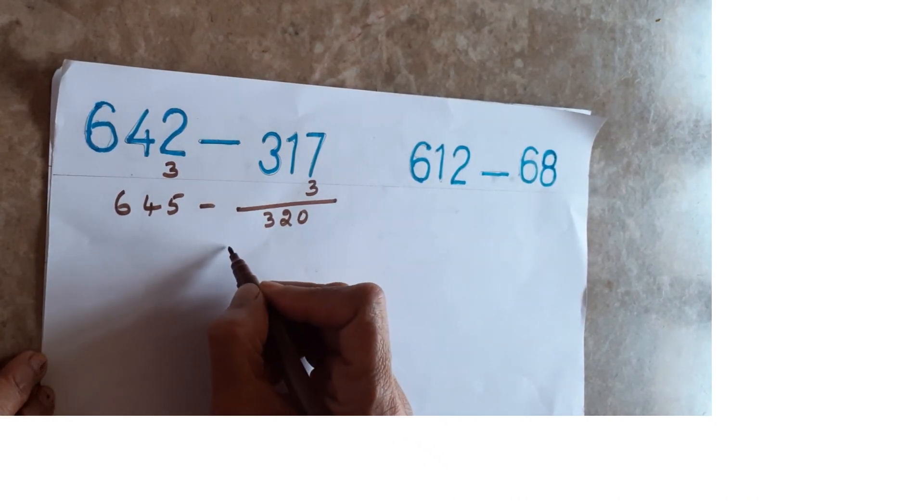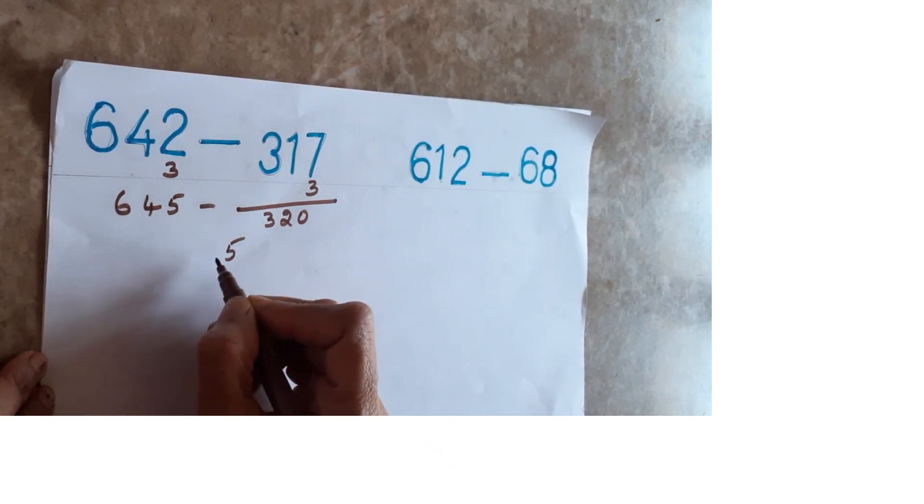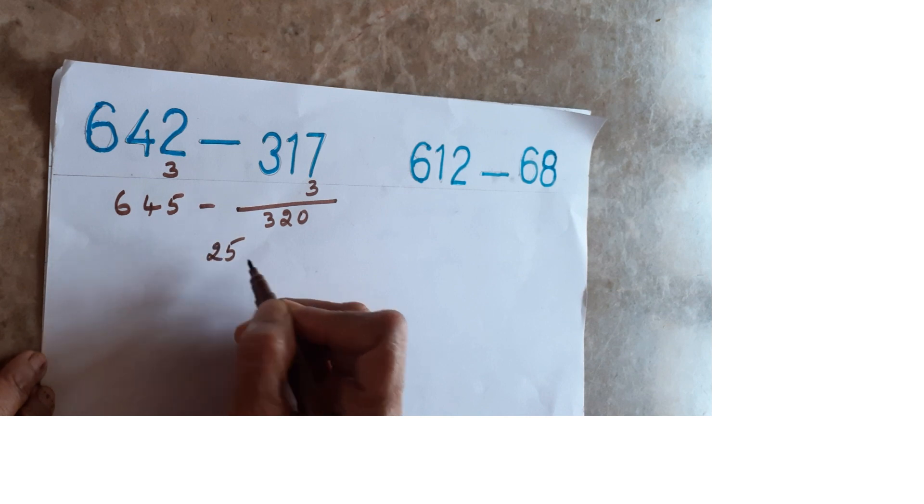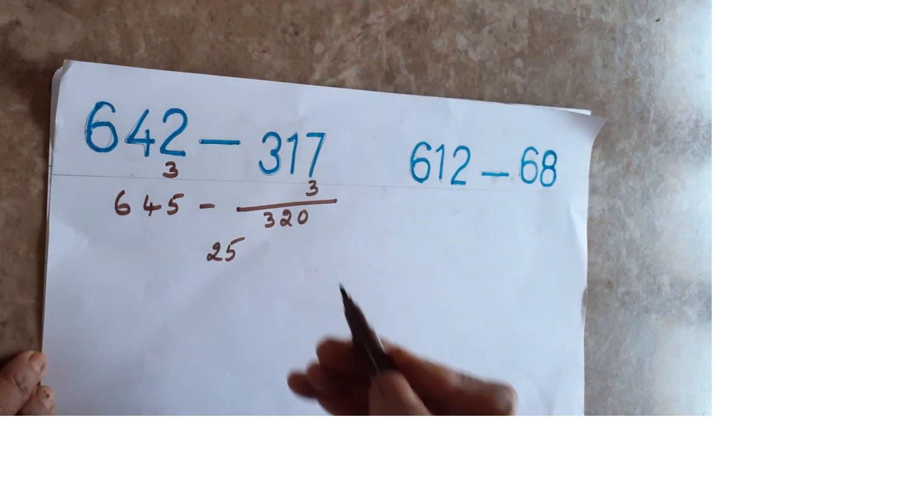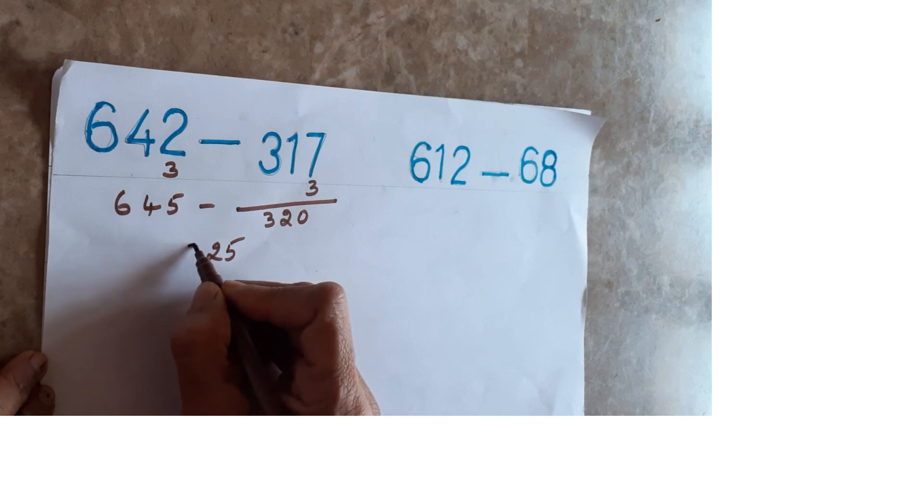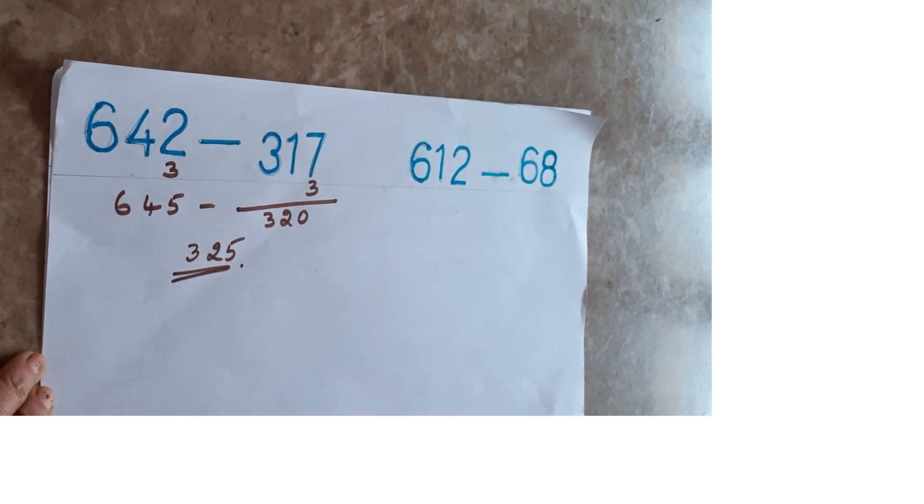5 minus 0 is 5 only. 4 minus 2 is 2. And then 6 minus 3 is 3. That's all is the answer.